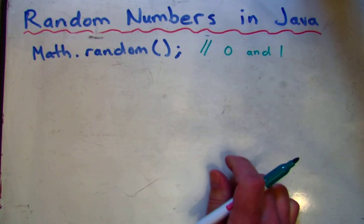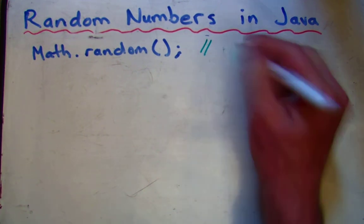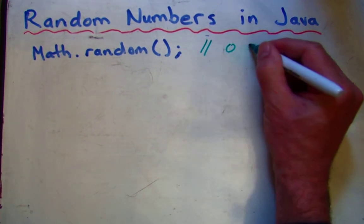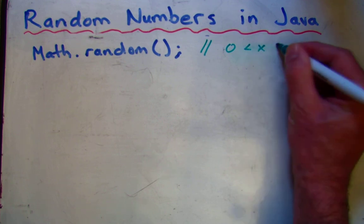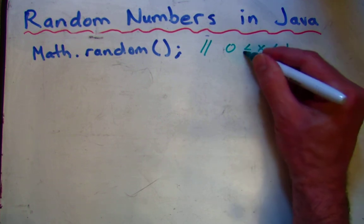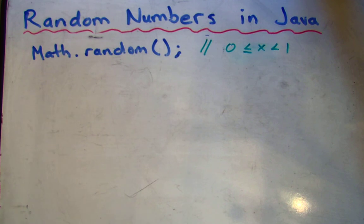But it's non-inclusive of 1, so we could say 0 where it's equal to 0 but not equal to 1. So it's a fractional number.